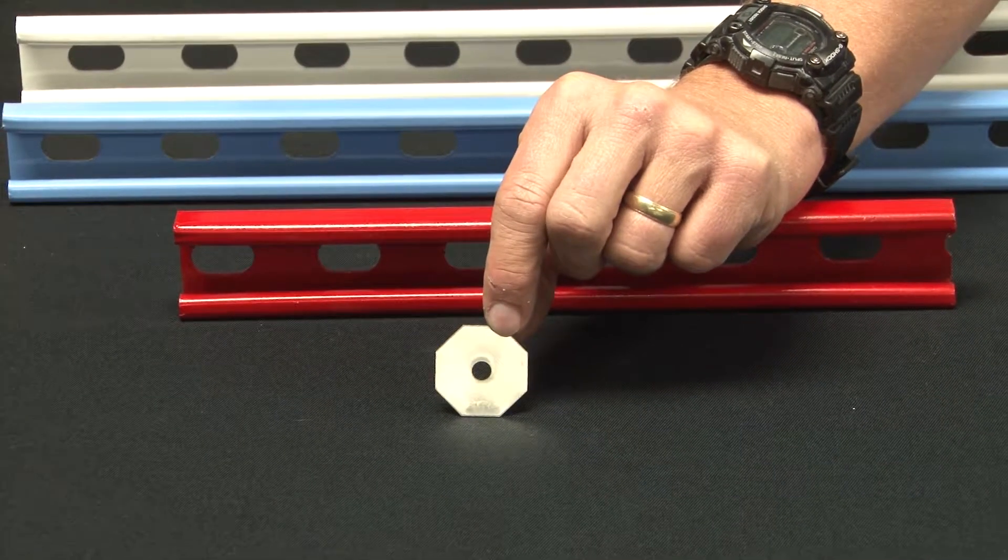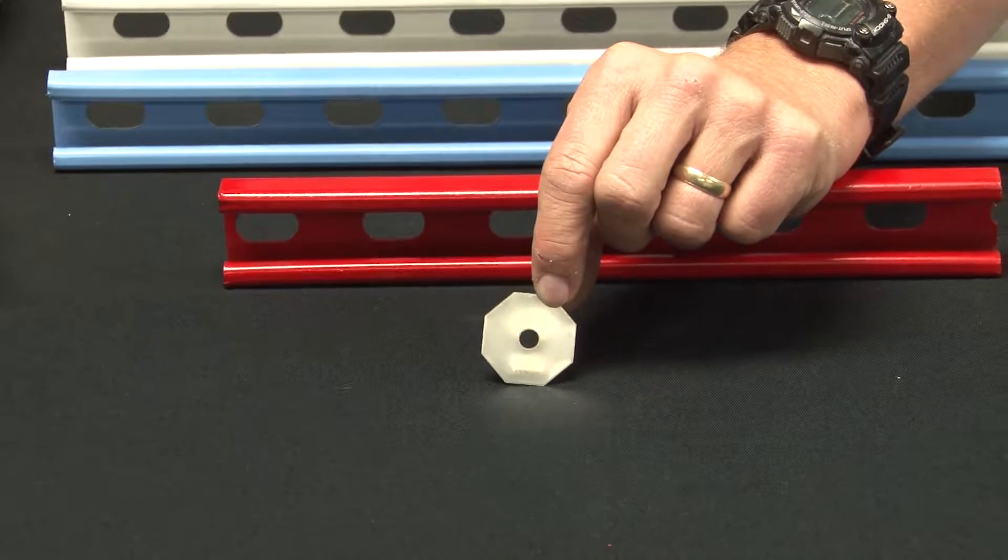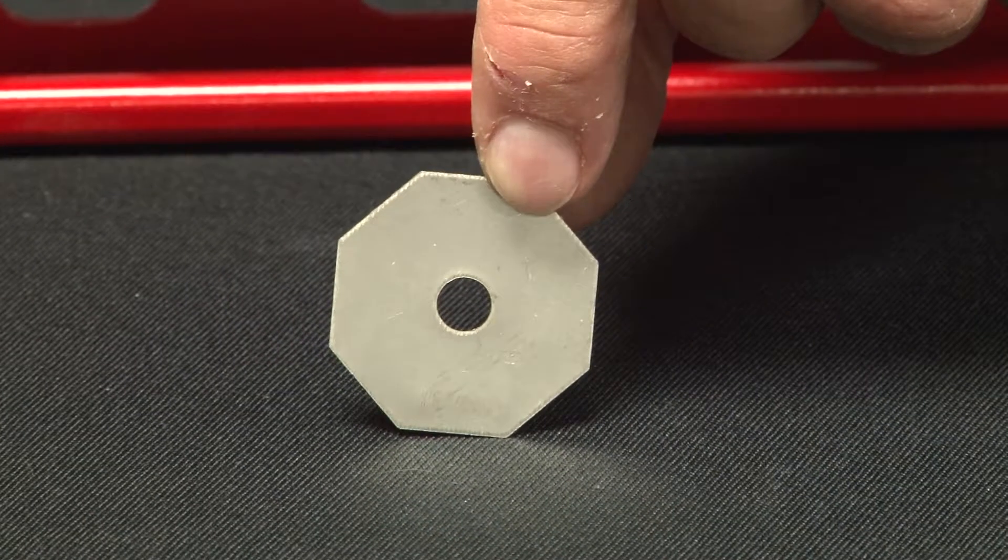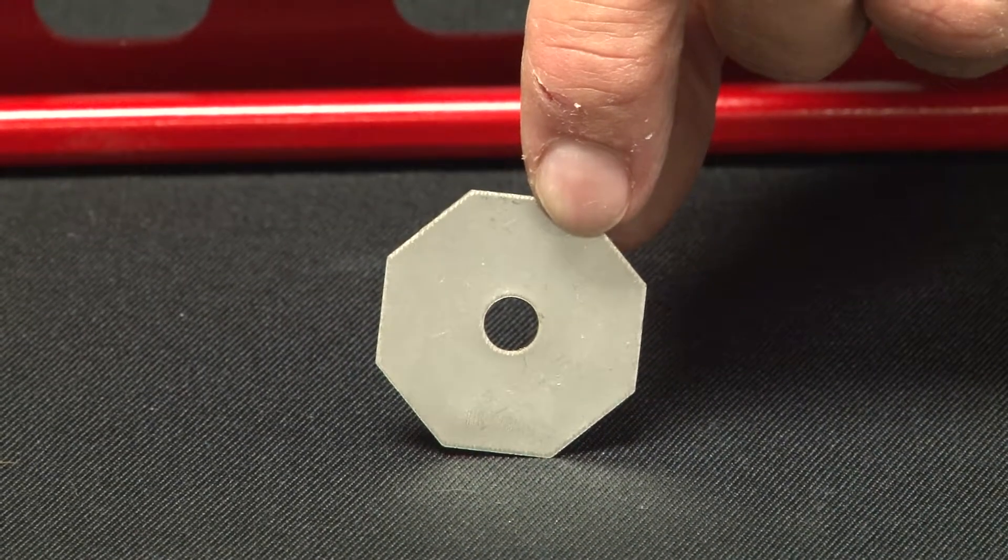Garvin Industries' octagon flat-sided washers are used for a variety of fastening applications, but they're most commonly used inside strut channel.